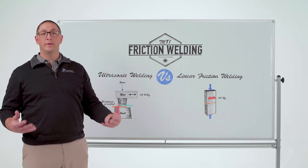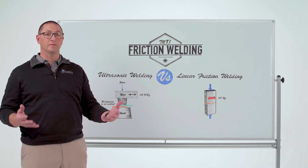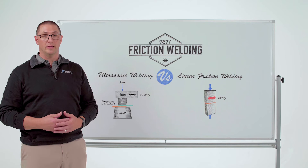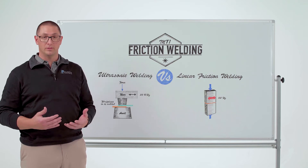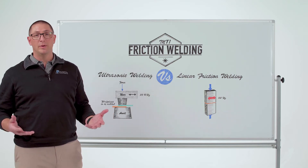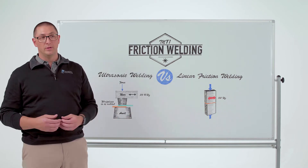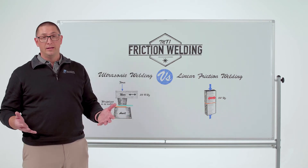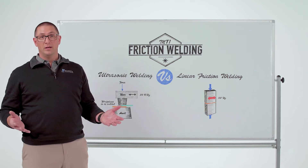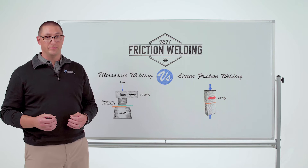MTI builds linear friction welders for the solid state joining of materials that don't rotate — they are suited better for an oscillatory motion. But we often get asked the question about ultrasonic: what is the difference between the two? Ultrasonic welding and linear friction welding look a lot alike, but there are some significant differences.